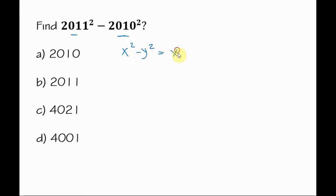So in this case, for x we have 2011 plus 2010 for y, times 2011 minus 2010. So what do we have here? If we add these two numbers, we have four thousand twenty-one times 2011 minus 2010, which is simply one.